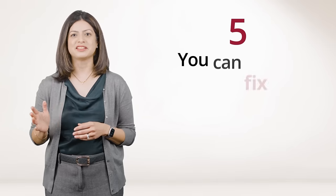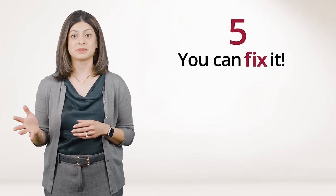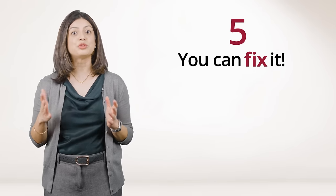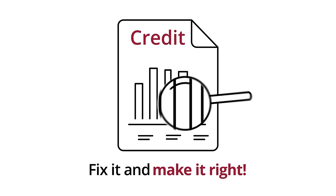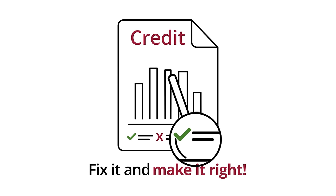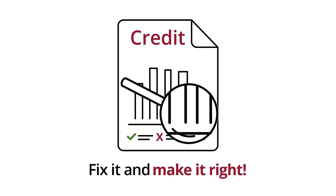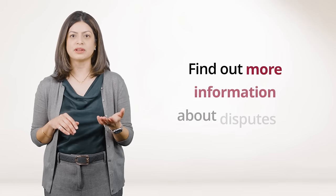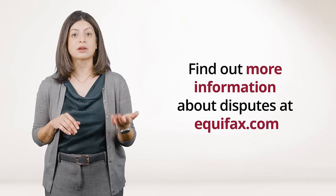Number five, and finally, one of the most important tips. If there's a problem, you can and should fix it. If you see something wrong on your credit report, you can file a dispute. It's important to act quickly if you discover an error. Maybe you find an account that doesn't belong to you or something is missing. Consumer reporting agencies will investigate any legitimate dispute and respond to you within 30 days, subject to some exceptions. You can find more information about disputes at Equifax.com.